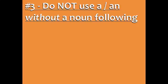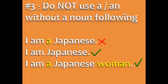Number three: do not use a or an without a noun following it. For example, you can't say 'I am a Japanese' because 'Japanese' is an adjective and there is no noun in the sentence. Instead, you could say 'I am Japanese' or 'I am a Japanese woman.' In this case, it's okay to use 'a' because there's a noun, 'woman,' after the adjective 'Japanese.'